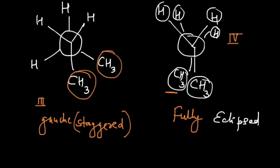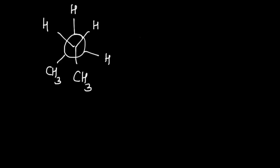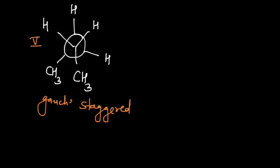If you rotate once again from fully eclipsed, you go back to a staggered form. The front carbon contains CH₃ and two H atoms; on the back carbon in the staggered form, CH₃ comes to the left and two hydrogens are on the other side. This is structure number five. Is this anti-staggered? No — this is another gauche-staggered form.